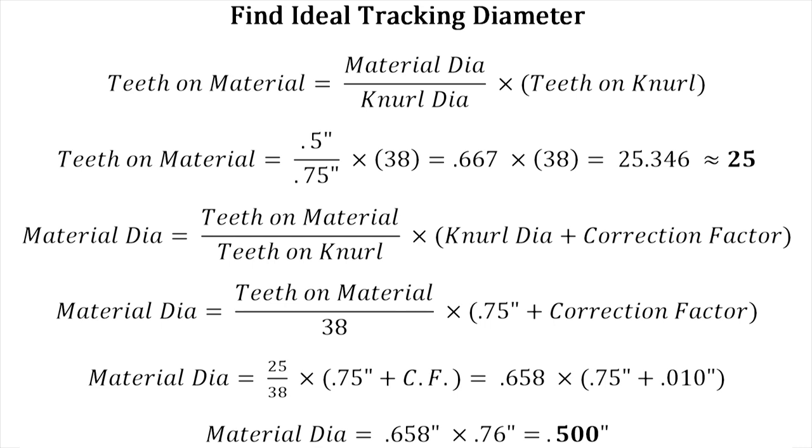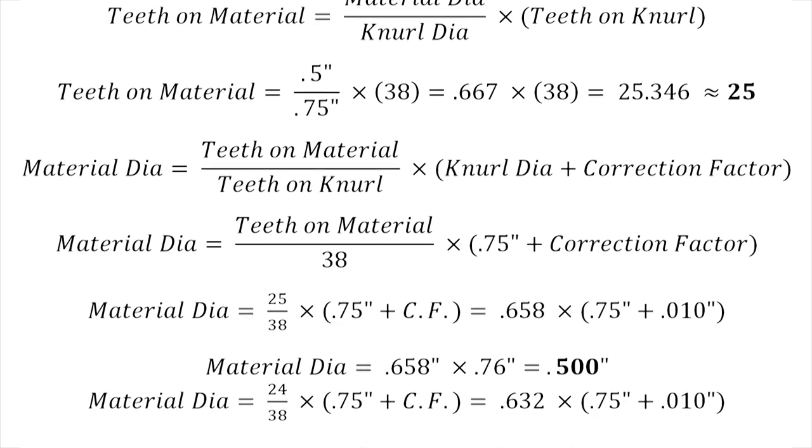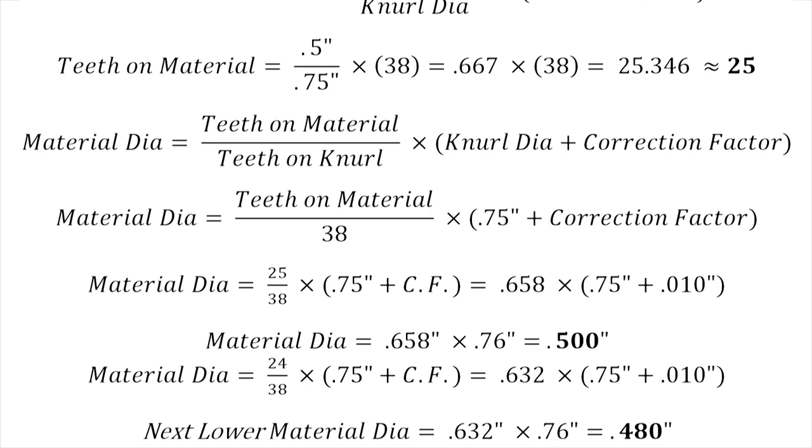If we use 25 divided by 38 teeth on the roller, multiply that by the diameter of the roller, which is three-quarters of an inch, plus the correction factor—in my case, the correction factor is ten thousandths—then you come up with a material diameter of half inch.